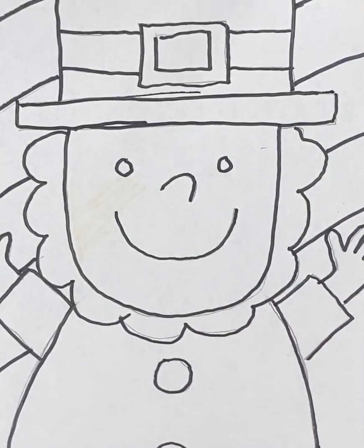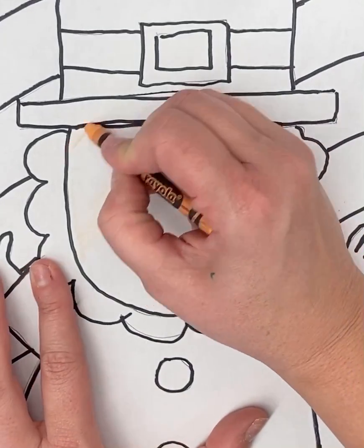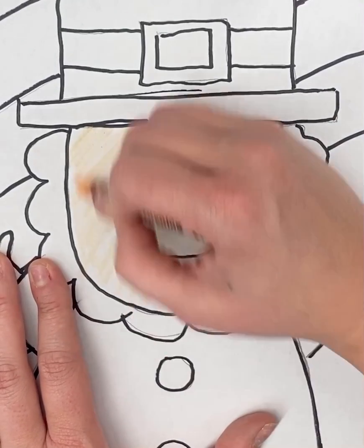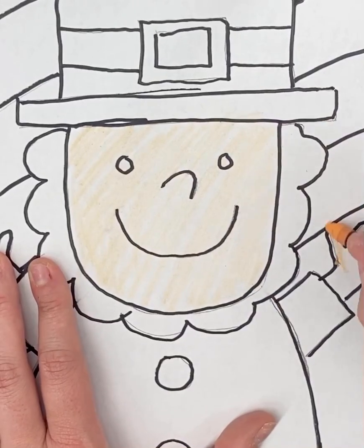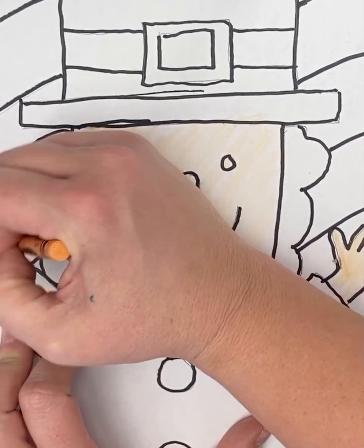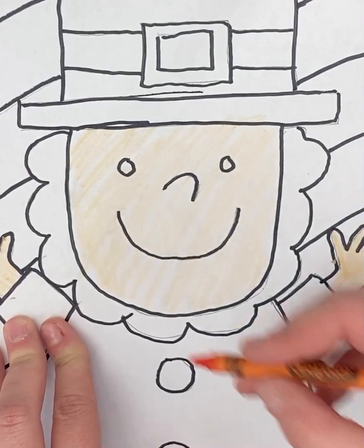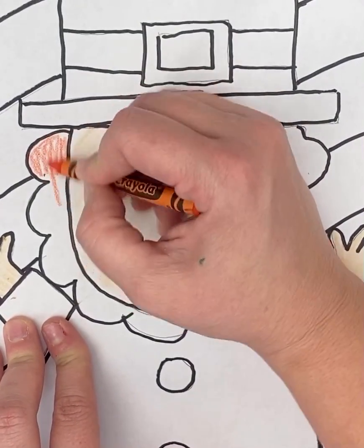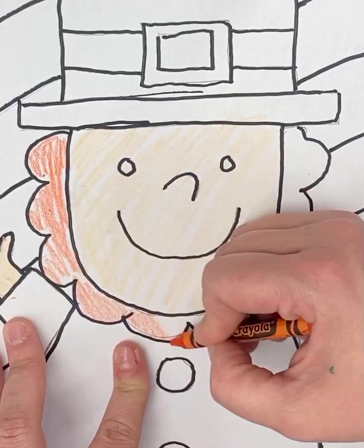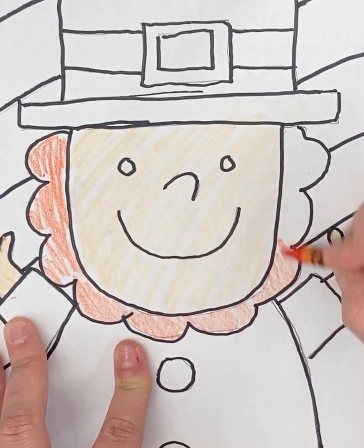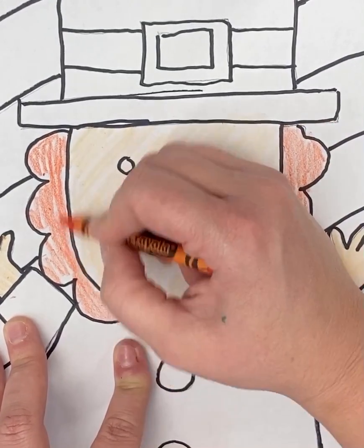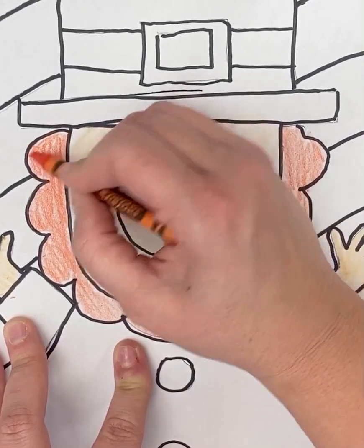So I was going to go ahead and start coloring him. I'm going to do his face, his hands, his beard. I'm going to do bright orange because I just think that's super fun. I don't know if leprechauns actually have orange hair. I've never seen a leprechaun. But I'm going to say they're Irish. So, yes, they do.